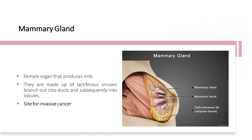Let's move along and discuss the main components of the breast tissue. The mammary gland is the female organ that produces milk and is made up of lactiferous sinuses which branch out into ducts and subsequently into lobules. It is a site for invasive cancer.